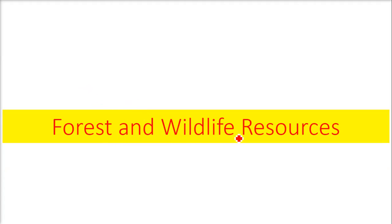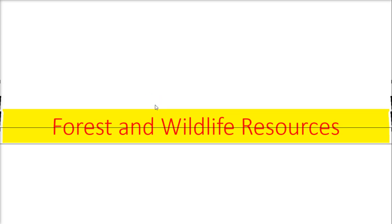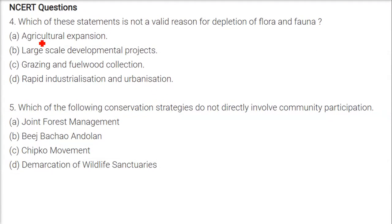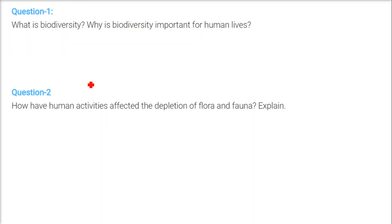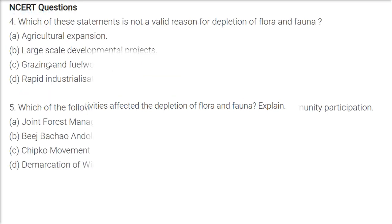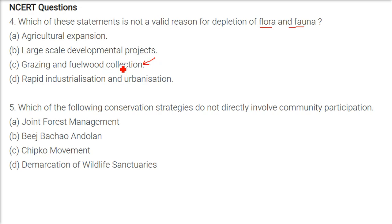Question and answer on forest and wildlife resources. This covers the NCERT first and second questions, which are multiple choice questions. The question asks: which of these statements is not a valid reason for depletion of flora and fauna? The answer here is grazing and fuel wood collection.